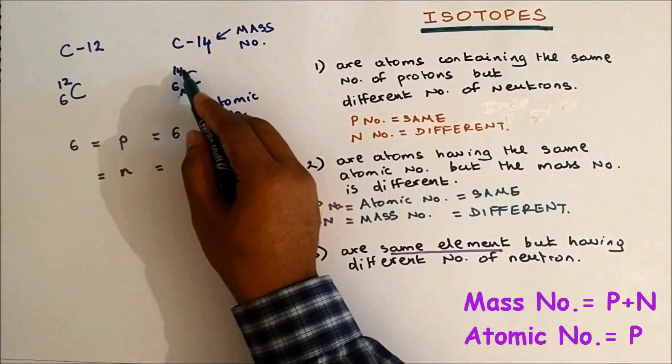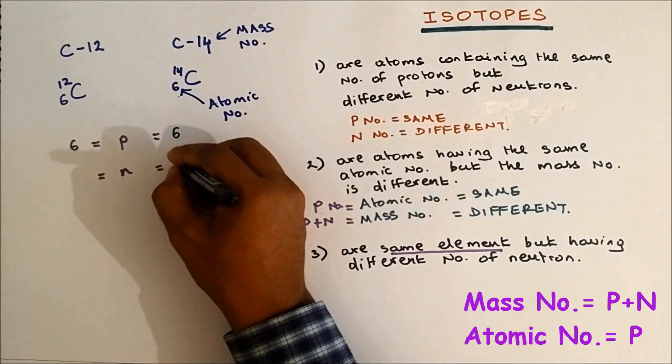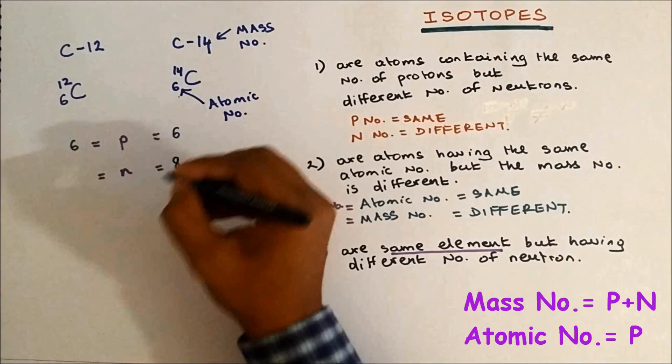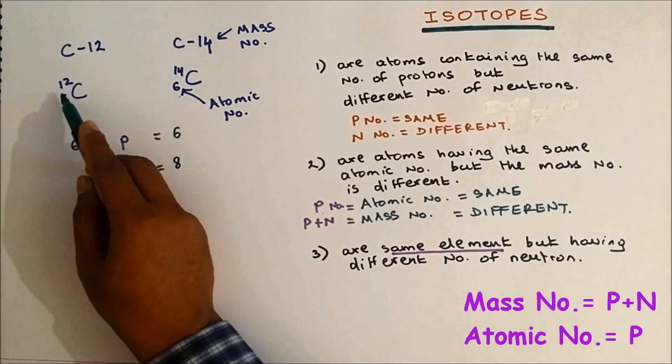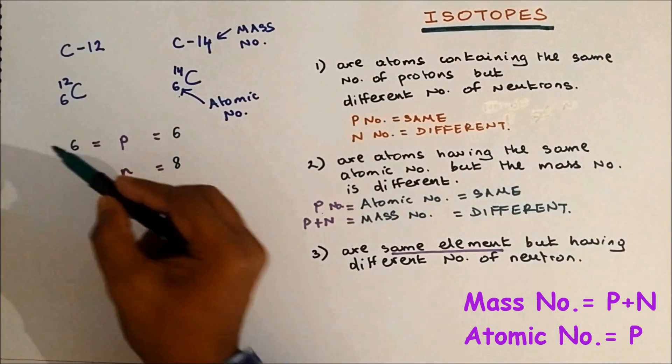The protons and neutrons for this carbon add up to 14, so the number of neutrons has to be 8. For this carbon, the protons and neutrons add up to 12, but the proton is 6, so neutron number is 6.